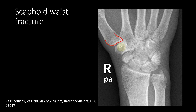In this X-ray, you can see the base of the first metacarpal, the trapezium, and the scaphoid. There is a cortical discontinuity visible here — this is a fracture of the waist of the scaphoid, also visible is the radial styloid. This is a scaphoid waist fracture, which can be seen on X-ray but can sometimes be missed.